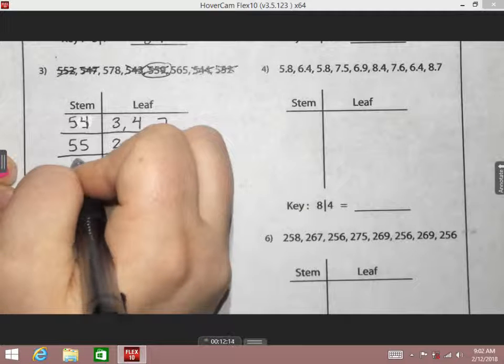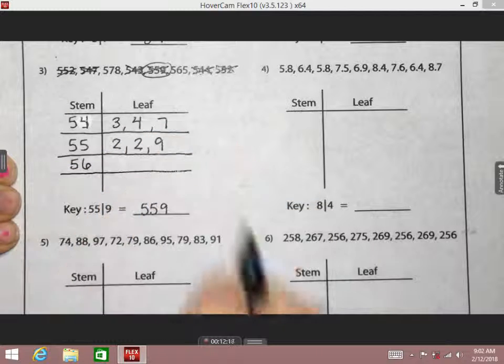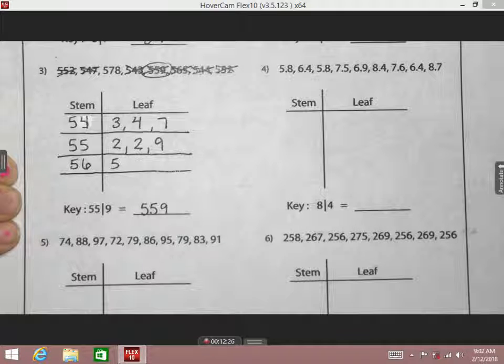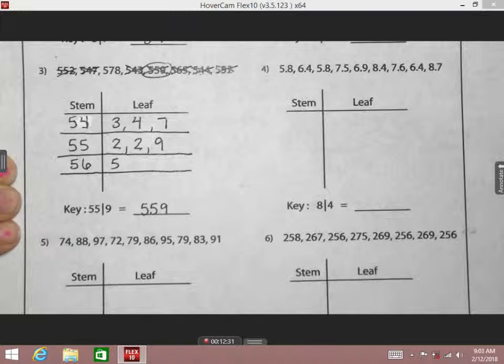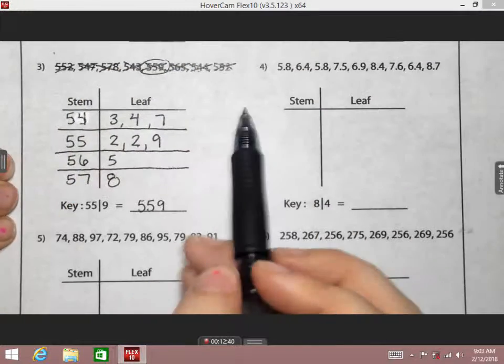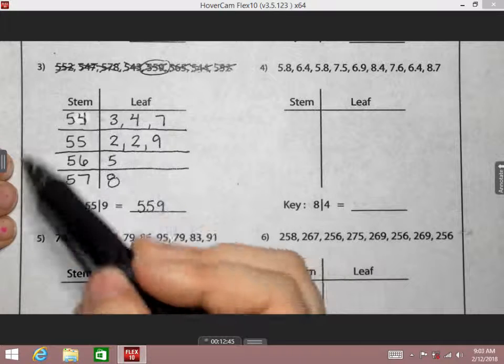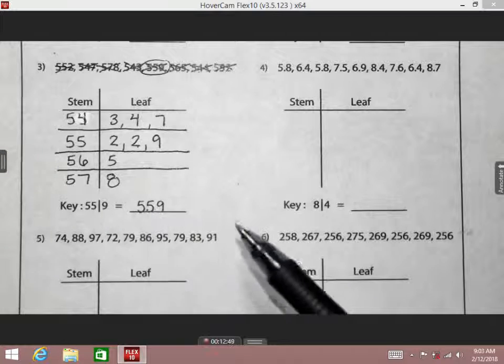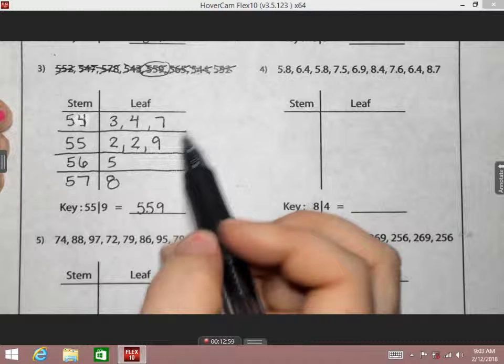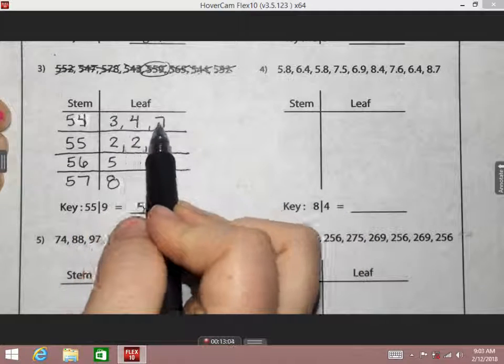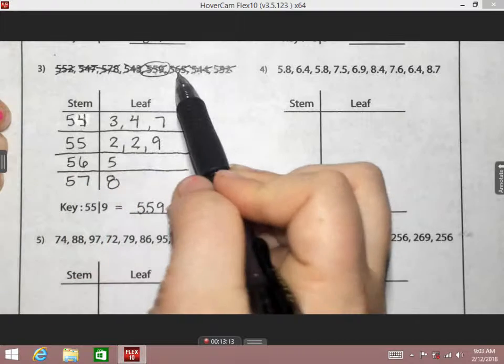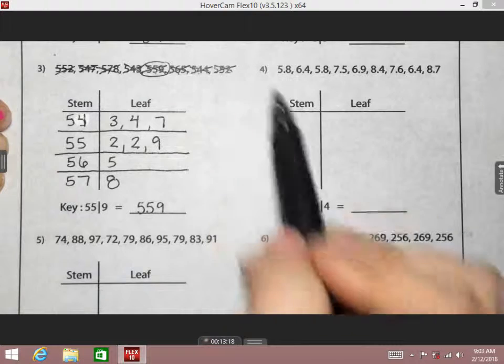What's my next stem going to be? 56. Can you tell me a leaf to go with that 56? 5. So we have 565. Any other leaves to go with that? What's my last stem? 57. And my leaves there? 8. Are there any other numbers left? Could you list these out in order for me? If we needed to find my median or my mean, listing them out in order would be beneficial to type them in the calculator correctly. I'm going to count the leaves. Do I have all of my leaves? Yeah, because I have all of my numbers.